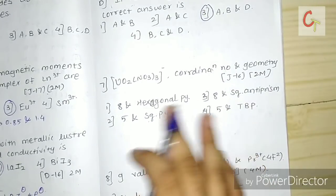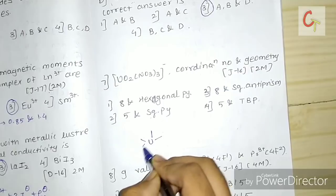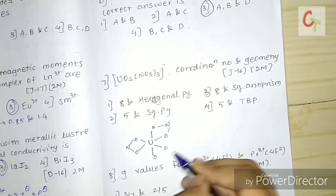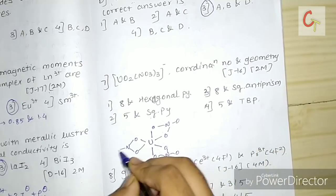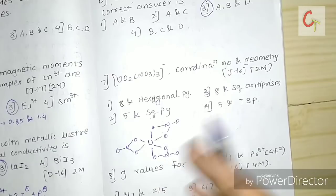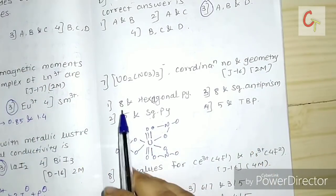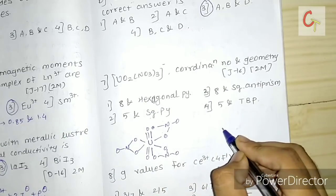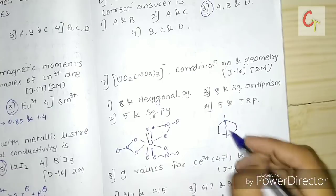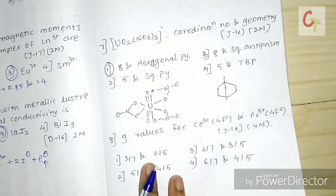Next question asks about the coordination number and geometry of a uranium complex. NO₃ is a bidentate ligand. There are 6 oxygens binding from nitrate in one plane and 2 oxygens above and below the plane acting as pyramidal caps. So the coordination number is 8 and the geometry is hexagonal pyramidal.